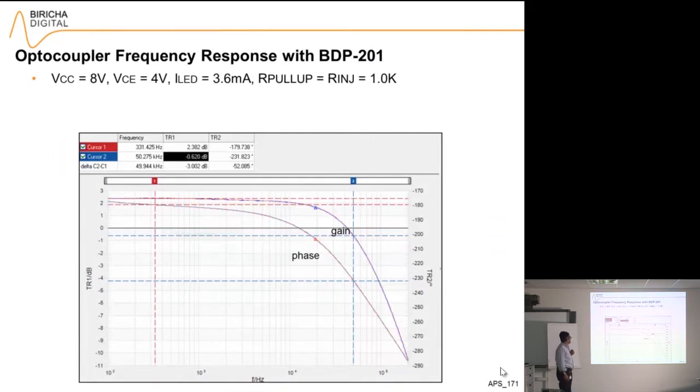This is the type of thing that you will get. So here is the Bode 100 plot. Here I have got the gain plot, here I have got the phase plot, and at low frequencies I have got 2.38 dB. I can convert that into my CTR—we will do that in a minute—and I have got my phase.